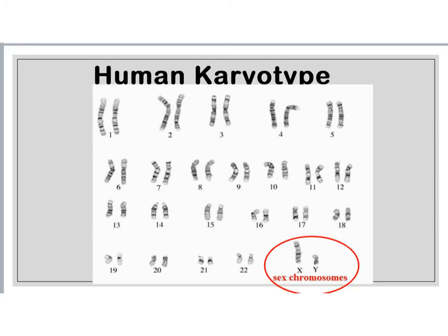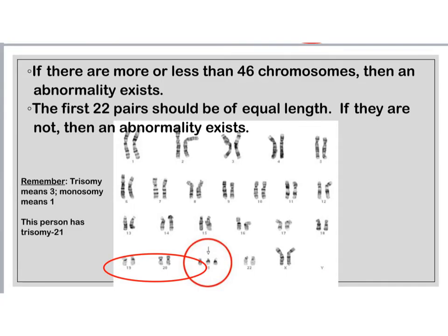For a human karyotype, we say that we have 22 autosomes. Autosomes are non-sex chromosomes — your sex chromosomes, your X and your Y, are separate, and we always place those at the end of our karyotype. When we're looking at a karyotype, there should be 46 chromosomes for a human. If there are more or there are less, then we know that there's some sort of genetic disorder. The first 22 pairs should also be equal in length, and if not, then we also know that there's some sort of chromosomal mutation.